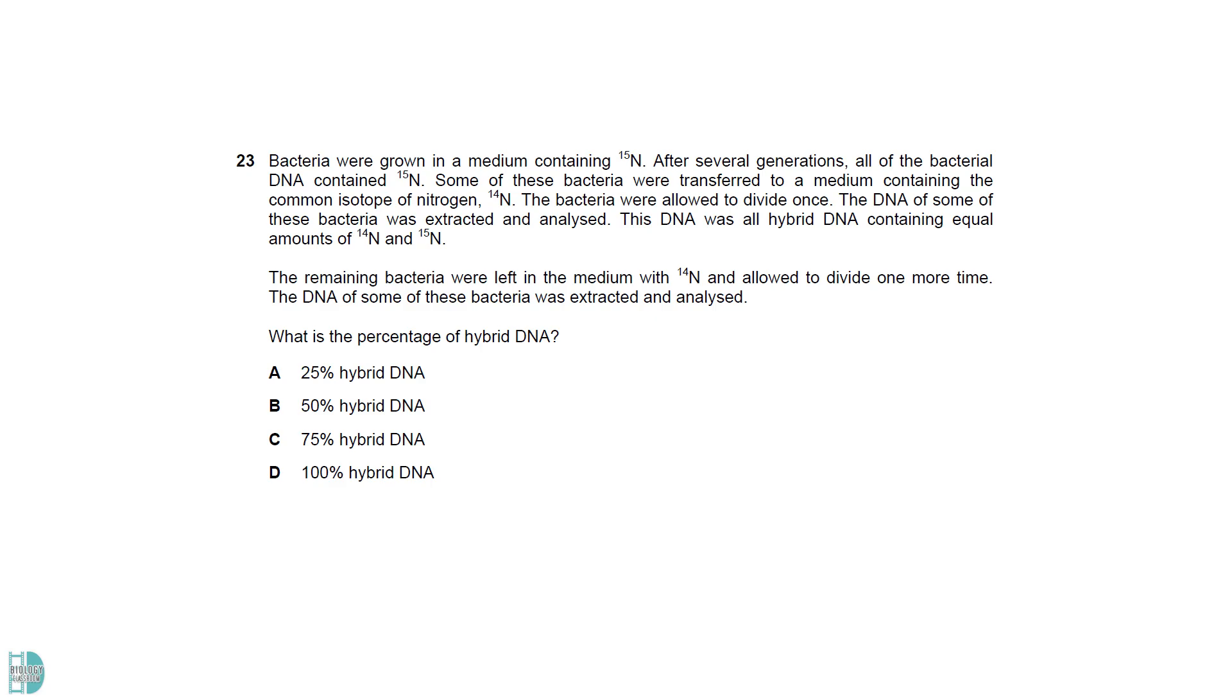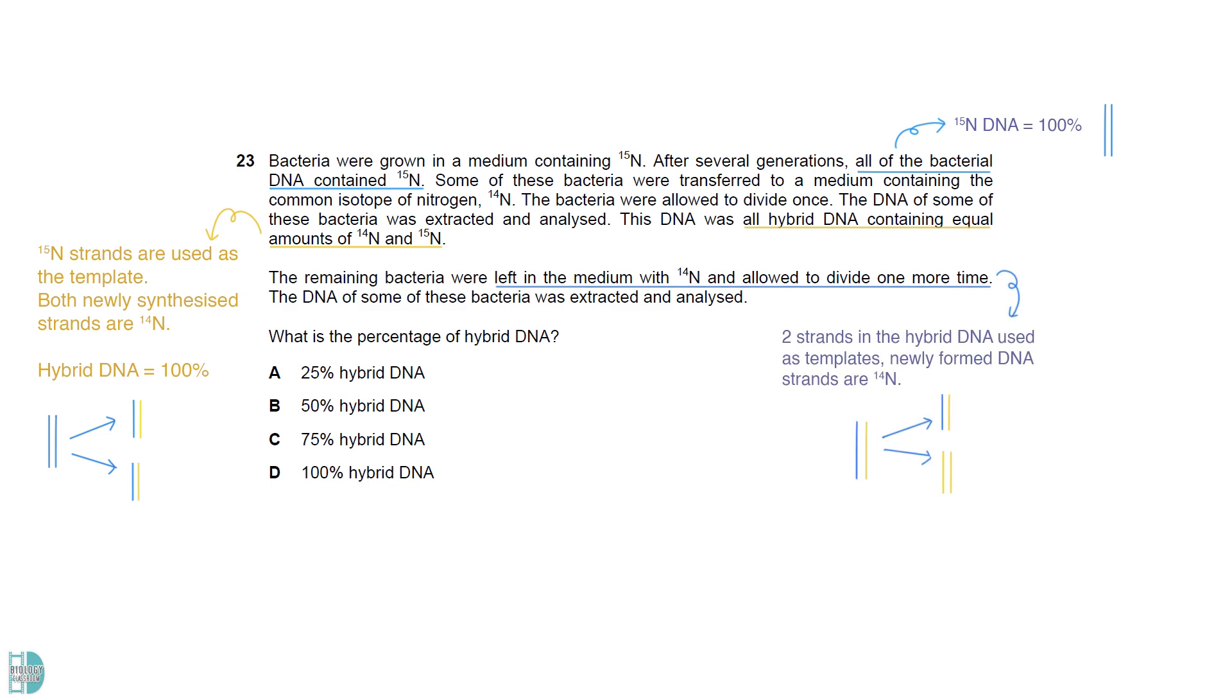In the beginning, all DNA contains N15. When they are left to replicate in the N14 solution, the N15 strands will be used as the template. Both newly synthesized strands would be N14. That is why the first analysis shows all the DNA are hybrid. Due to the semi-conservative replication, if the hybrid DNA replicated once in the N14 solution, the parental strands join with the newly formed N14 strands, resulting in half hybrid DNA molecules and half entirely N14 DNA molecules.